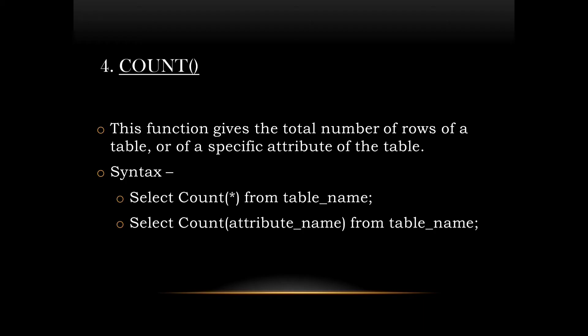The next function is count. This function returns the number of rows or records present in the table, or in a specific column of the table. There are two syntaxes of this function. The first syntax — count star — returns the total number of records in the table. In this syntax, null values are also counted.